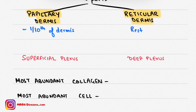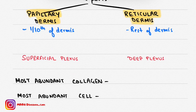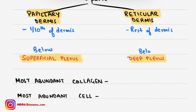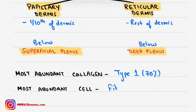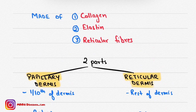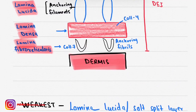The papillary dermis constitutes one-tenth of the total dermis, and the rest is reticular dermis. There are two plexuses in the dermis: a superficial plexus present below the papillary dermis and a deep plexus present below the reticular dermis. The most abundant collagen in the dermis is type 1 collagen, which makes up around 70% of the dermis, and the most abundant cell is the fibroblast.